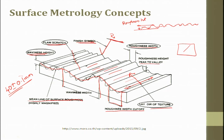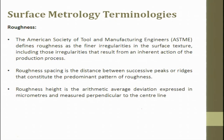The two important parameters are waviness and roughness — we are more focused on roughness parameters compared to waviness. Roughness is defined by the American Society of Tool and Manufacturing Engineers (ASTME) as the finer irregularities in surface texture, including those that result from an inherent action of a production process. Roughness spacing is the distance between successive peaks or ridges constituting the predominant roughness pattern.